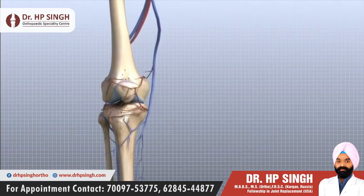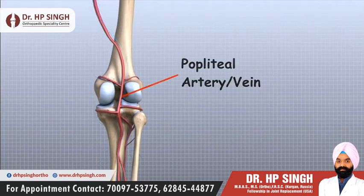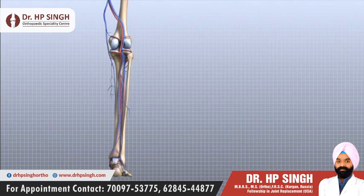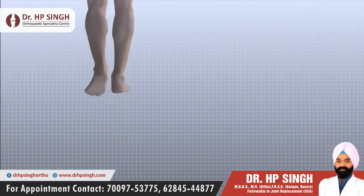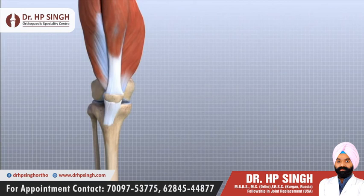The major blood vessels around the knee travel with the tibial nerve down the back of the leg. The popliteal artery and the popliteal vein are the largest blood supply to the leg and foot. If the popliteal artery is damaged beyond repair, it is very likely the leg will not be able to survive. The popliteal artery carries blood to the leg and foot, while the popliteal vein carries blood back to the heart. The knee has a somewhat unstable design, yet it must support the body's full weight when standing, and much more than that during walking or running, so it's not surprising that knee problems are a fairly common complaint among people of all ages.